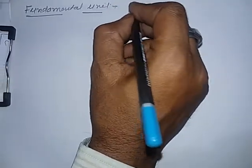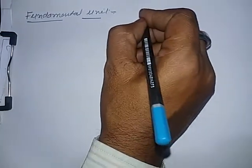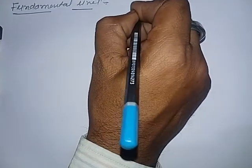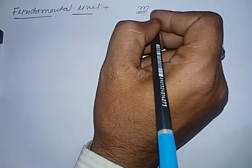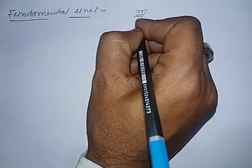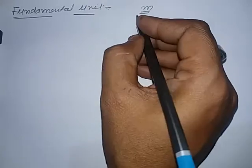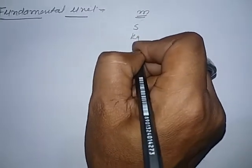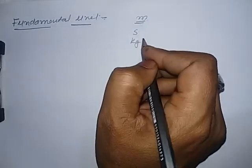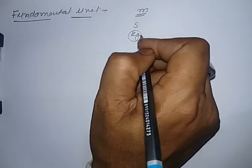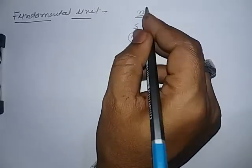For example, the unit of length is meter. Now we can't resolve meter. The unit of time is second. We can't resolve it. The unit of mass is kg. We can't resolve kg into simpler form. This is the simplest form.